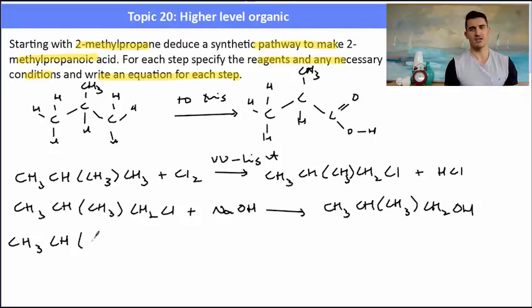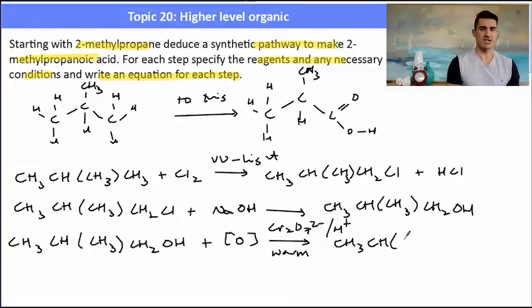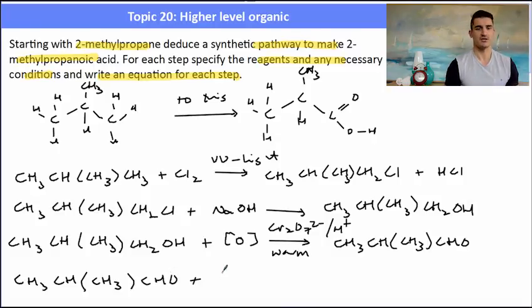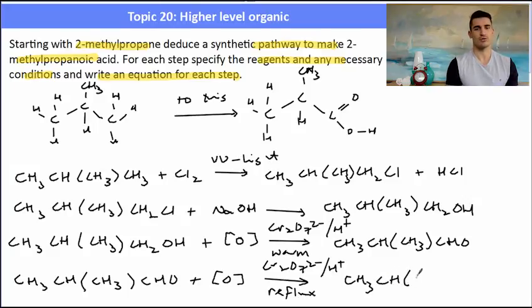Once I've got my primary alcohol then I can convert it into the aldehyde first using the acidified potassium dichromate plus my oxygen to represent that I need to balance for oxygen in this reaction. But I add in my oxidizing agent acidified dichromate and I warm that to form the aldehyde which in this case would be CH3CH and then our branch CH3CHO. Make sure you write the aldehyde functional group as CHO. Once I've got my aldehyde functional group I do the same reaction under reflux conditions to form my acid. So again balancing for the oxygen by adding the square brackets for O. Adding my oxidizing agent of acidified potassium dichromate and then stating that it needs to undergo reflux would give me my product being 2-methyl propanoic acid.